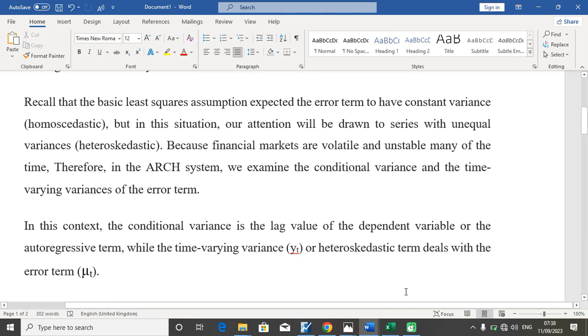The conditional variance is the lag value of the dependent variable or the autoregressive term, while the time-varying variance or heteroscedastic term will be dealing with the error term, which is the μt.